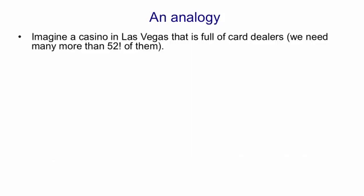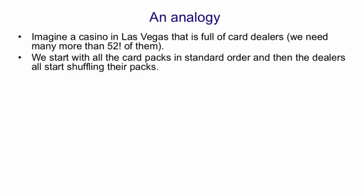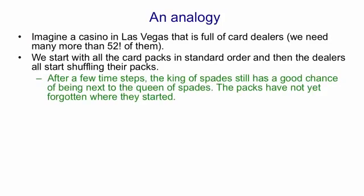Here's an analogy just to help with the concept. Imagine a very large casino in Las Vegas that is full of card dealers—in fact we have many more than 52 factorial card dealers. We start with all the card packs in standard order, and then the dealers all start shuffling their packs. Let's suppose that the standard order has the ace of spades, then the king of spades, and the queen of spades. The dealers do random shuffles—they don't do fancy shuffles that bring them back to the same order again.